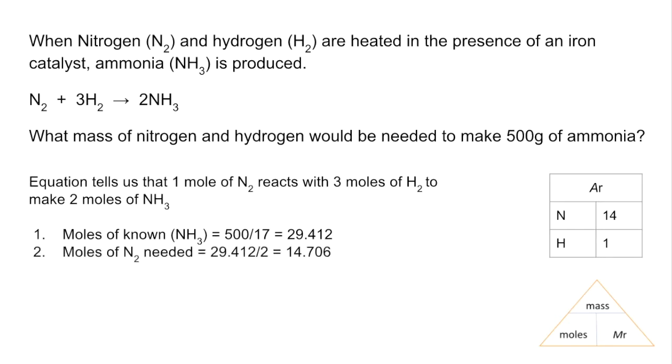So how many moles of nitrogen will be needed? Well, what's the ratio between ammonia and nitrogen? It's two to one, so we half the ammonia moles to get the nitrogen moles. So that's 14.706 moles. Moles of hydrogen is a little bit trickier - we've got a two to three ratio between the ammonia and the hydrogen.